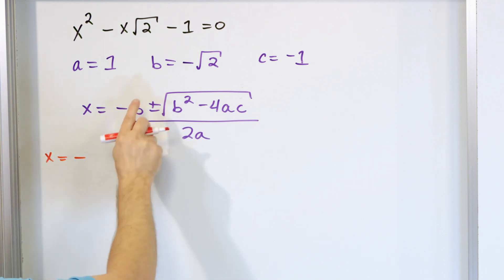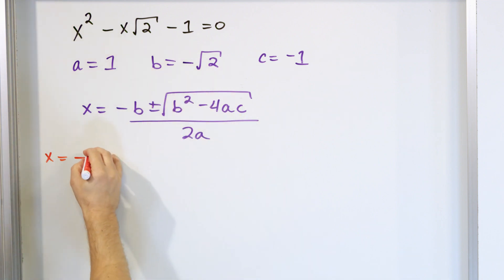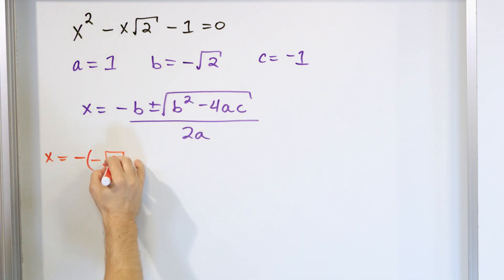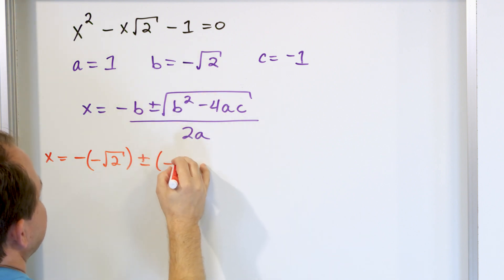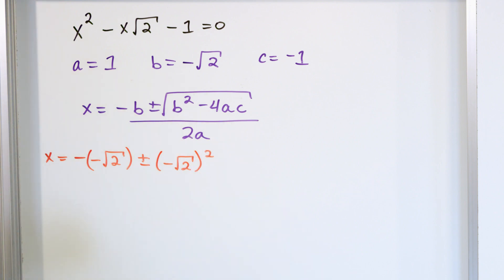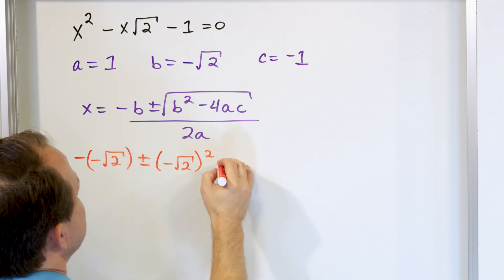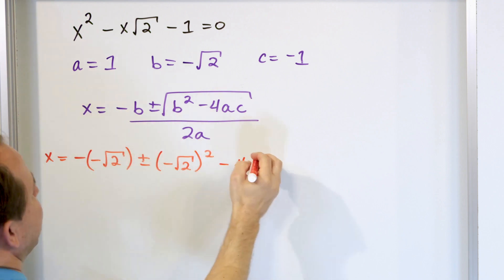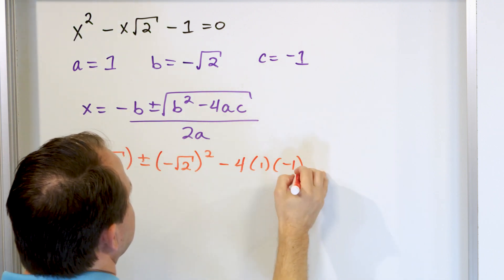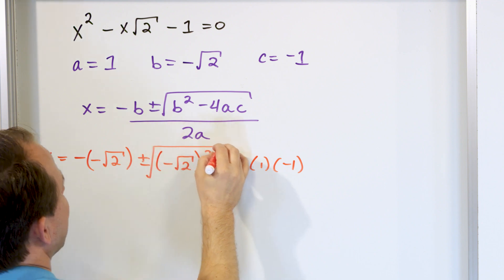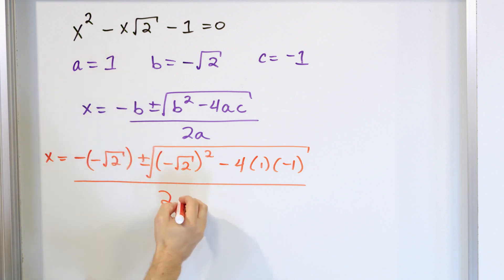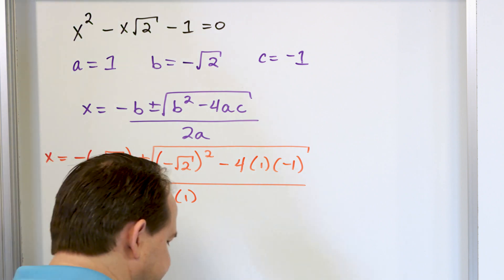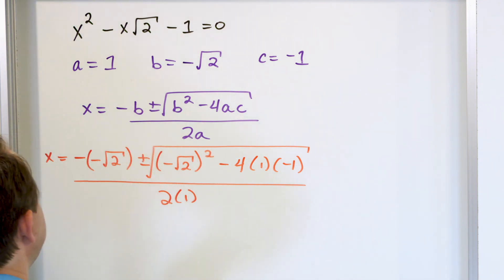Negative b — the negative is here, and b is actually a negative radical — so we put inside negative square root of 2. Plus or minus b squared: b is negative square root of 2, so we square that. Minus 4 times a, which is 1, times c, which is negative 1. All of this lives under the radical, and all of this is the numerator over 2 times a, which is 1. That's why I was telling you in the beginning: write everything down, then do the calculations in the next step. It makes it a lot easier.